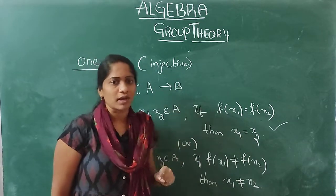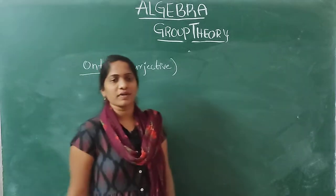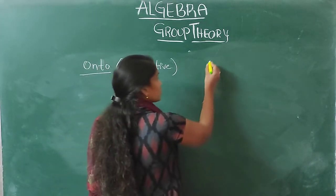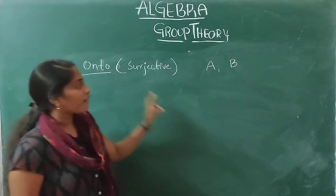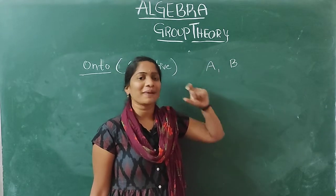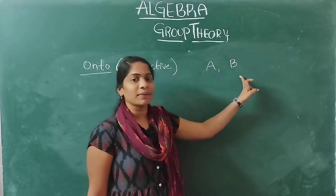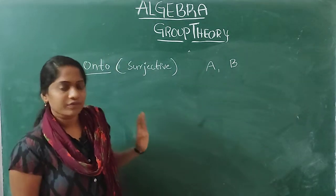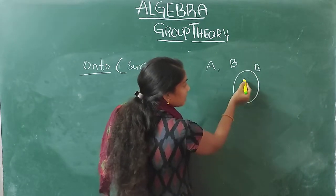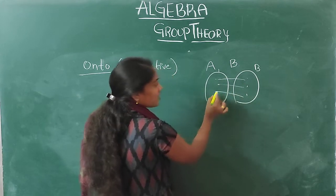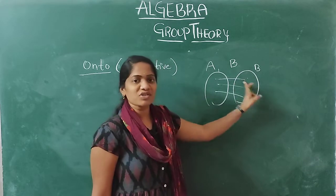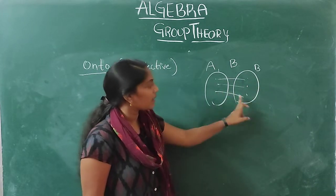Now coming to the onto function, also called surjective. The basic definition is: you take two non-empty sets A and B; onto means every element in B has a pre-image in A. That is, for every element in the codomain B, there must exist at least one element in A that maps to it.